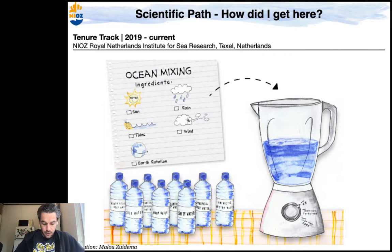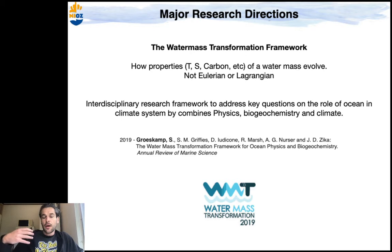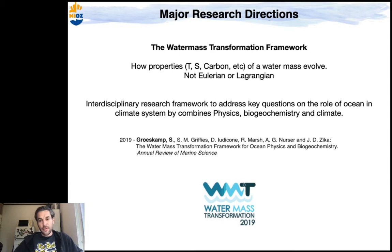The main topic of what I do is ocean mixing. I also have other research interests, such as the water mass transformation framework. Water mass transformation is a way to look at ocean circulation — especially properties such as temperature, salinity, and carbon — and it's a complementary approach to Eulerian or Lagrangian views. It's a very nice framework for interdisciplinary research between physics, biogeochemistry and climate.